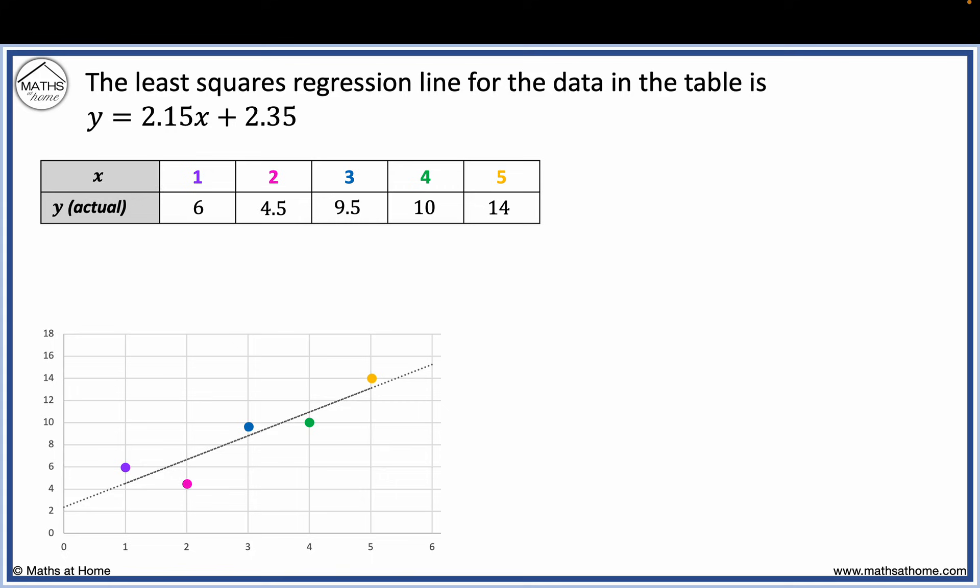The scatter plot displaying the data is as shown. The line of best fit is the least squares regression line.